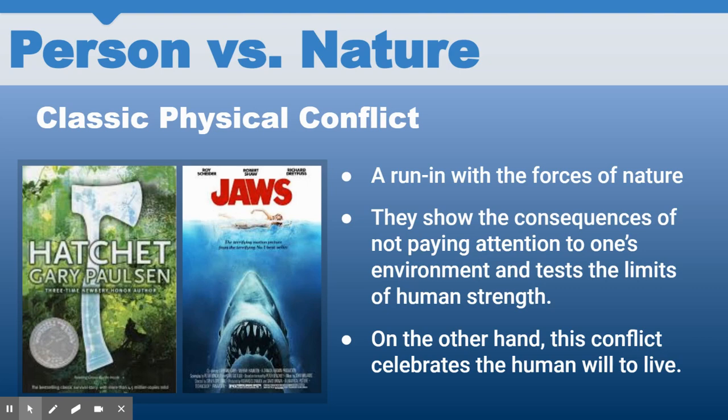Jaws is another classic example of person versus nature — a giant shark bent on killing anyone who dares enter the ocean. This type of conflict often plays on the ancient fear that humans have: when we venture into deep water or some unknown wild territory, we're not sure if we're going to survive. That deep and old fear is what makes it such an interesting story.